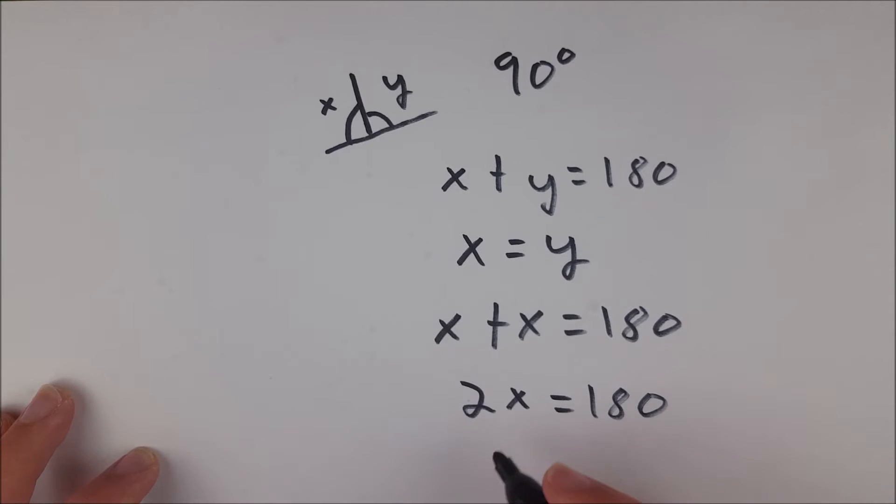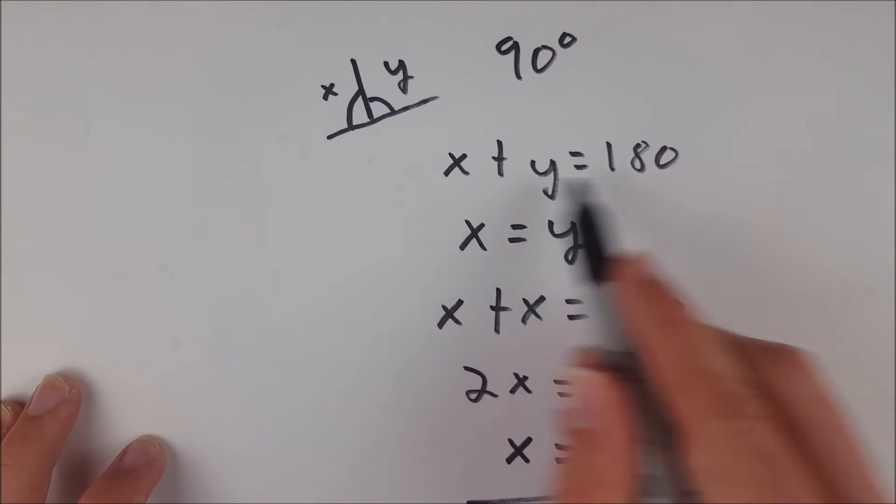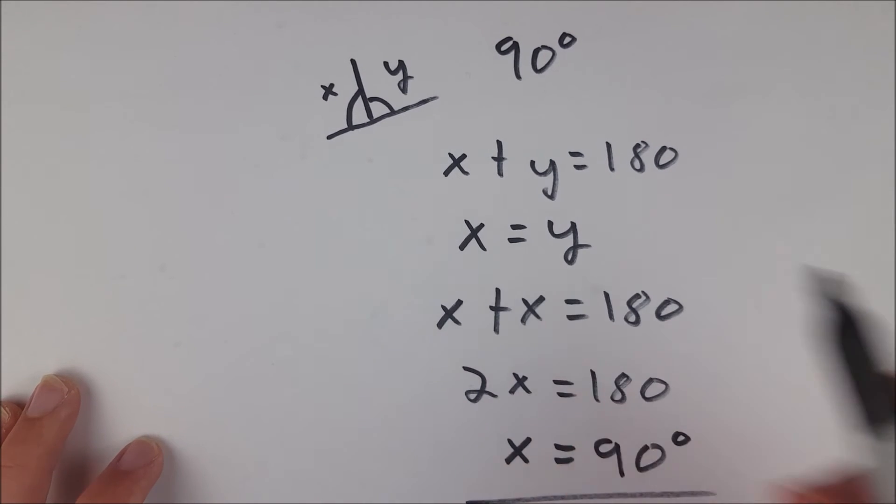And then dividing both sides by 2, we get our final result, which is x equals 90. And of course, in this case, we are talking about degrees. So I'll throw that on with our final conclusion. So we know that if we have two supplementary angles that are also congruent, then they have to each have a measure of 90 degrees.